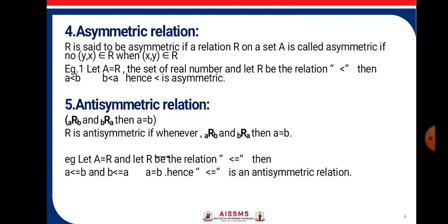Asymmetric Relation: R is said to be asymmetric if, whenever (X,Y) belongs to the relation, then (Y,X) is not present in the relation. Consider the example where A equals the set of real numbers and R is the relation 'greater than'. Then B greater than A and A greater than B cannot both hold. Hence this relation is asymmetric.